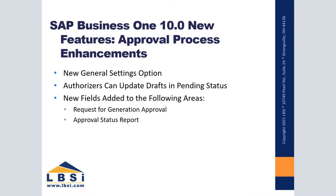The approval process feature has received some nice additions as part of the 10.0 enhancements of SAP Business One. Some new features have been added, like the ability to have the authorizer update drafts in pending status, as well as additional new fields in various approval process screens. These new features can help reduce the amount of time needed for back and forth communication between the authorizer and originator.